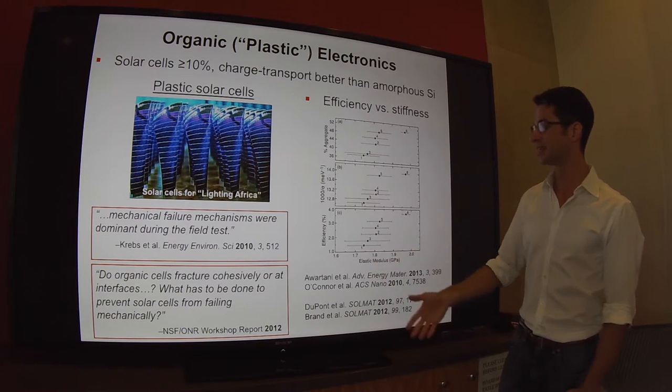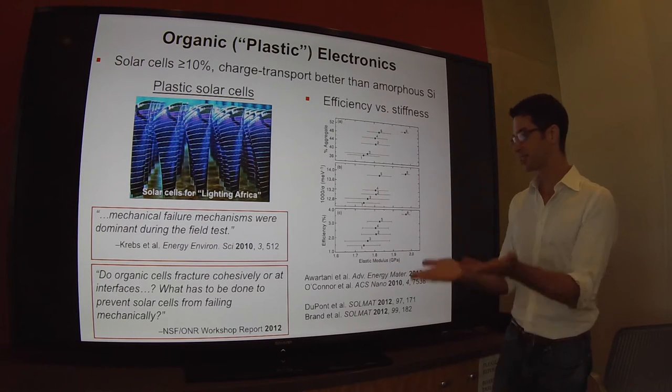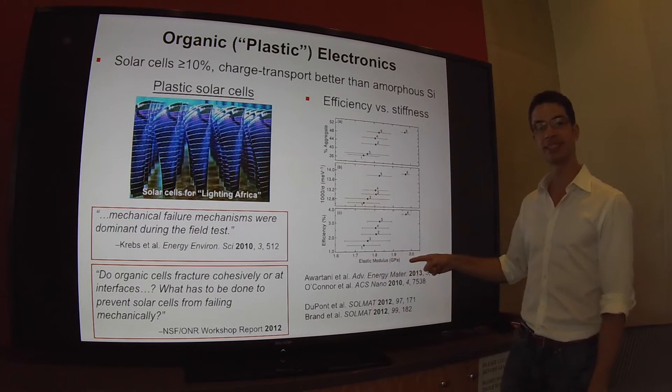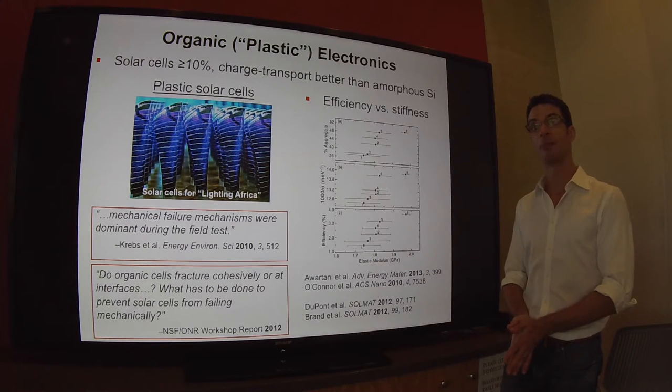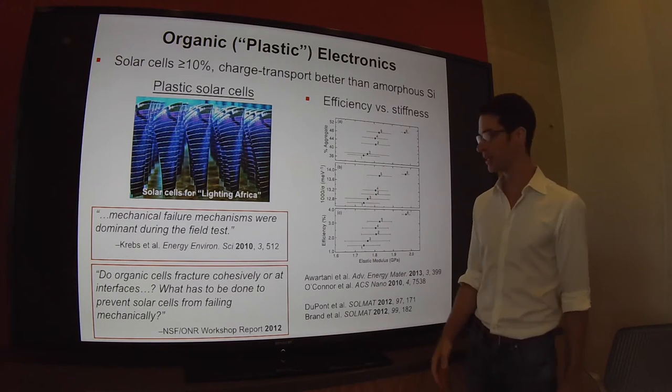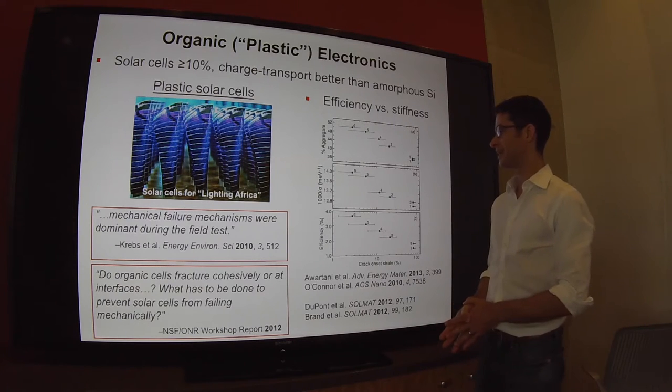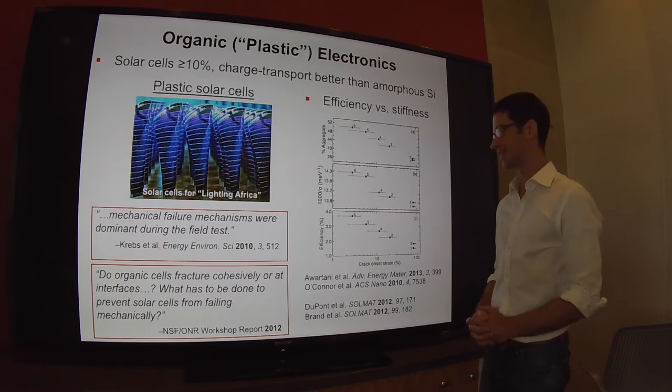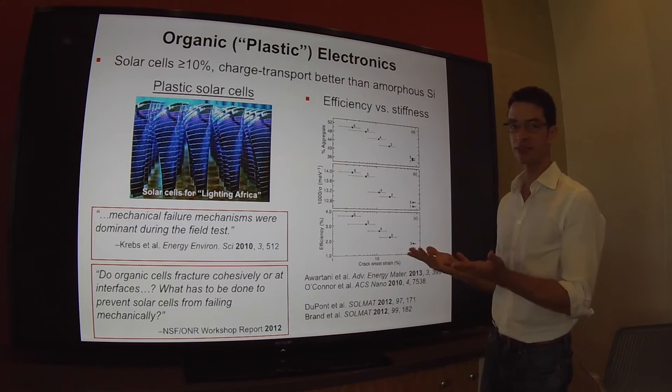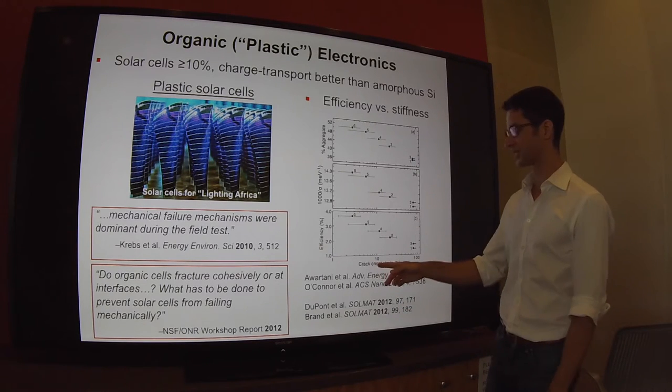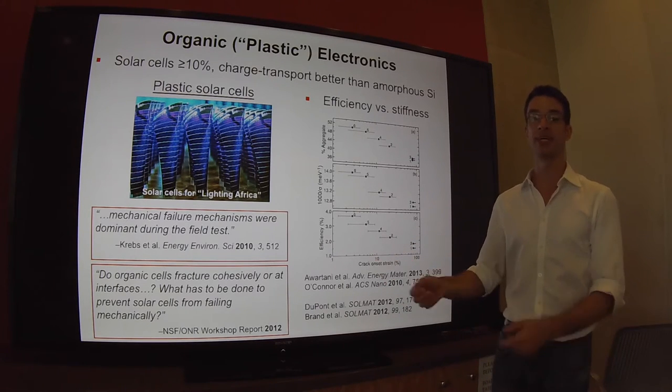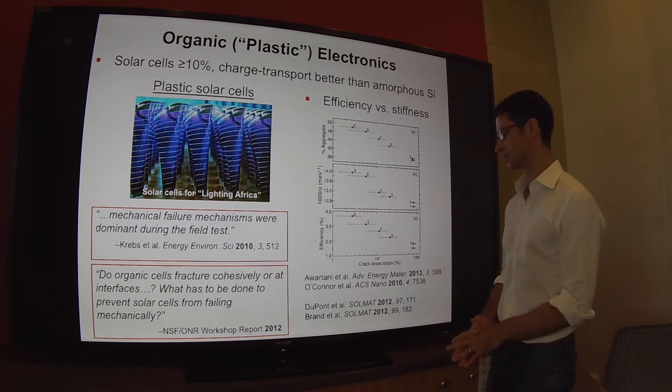What we find is that as order goes up, the efficiency goes up, but the stiffness as manifested in the tensile modulus also goes up. The researchers also published an analogous study of brittleness. As the efficiency goes up, the order goes up, and the brittleness in the form of the crack onset strain on an elastic substrate also increases.